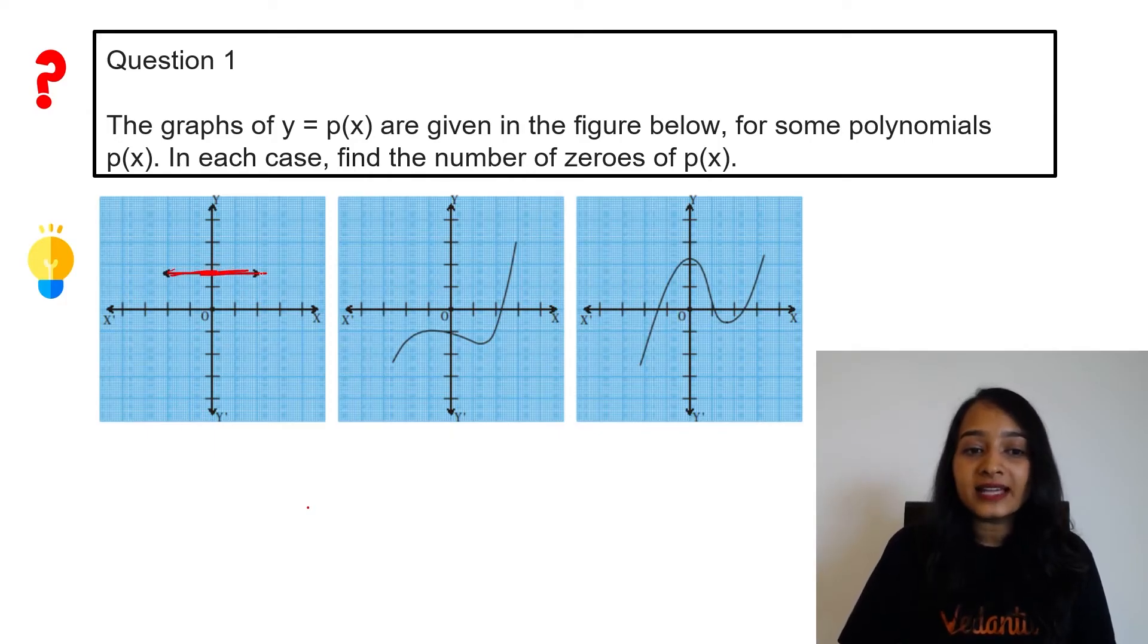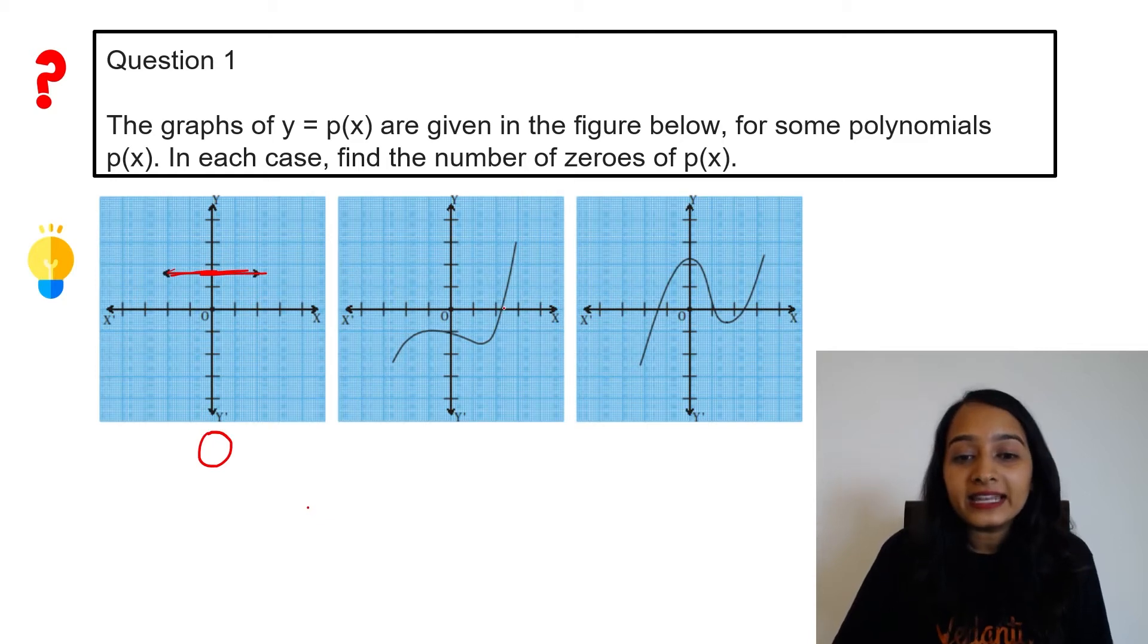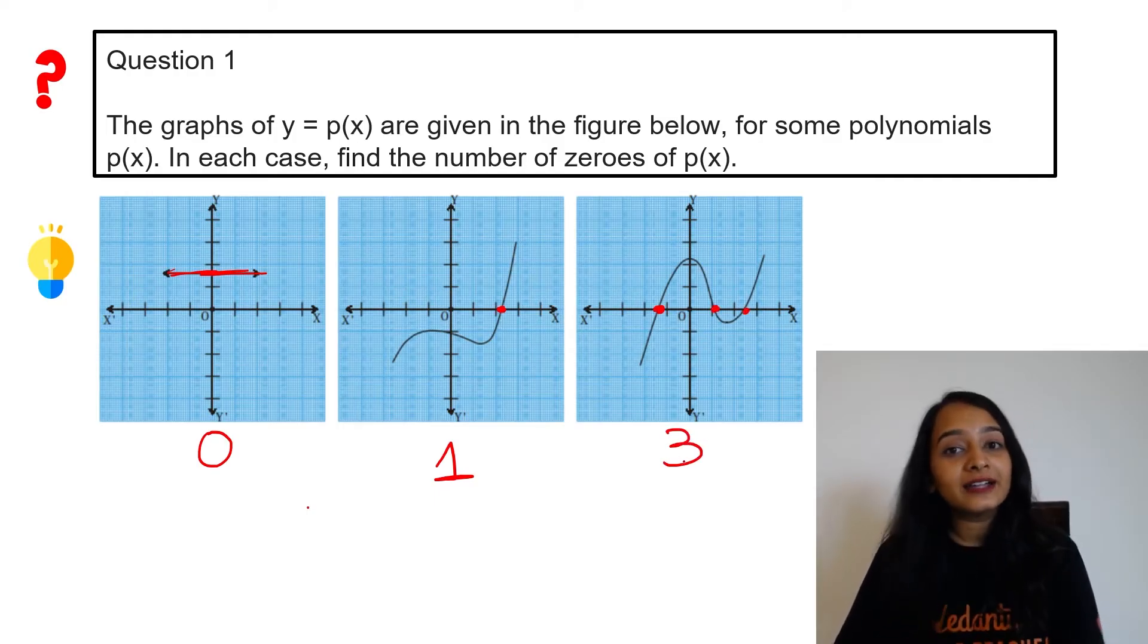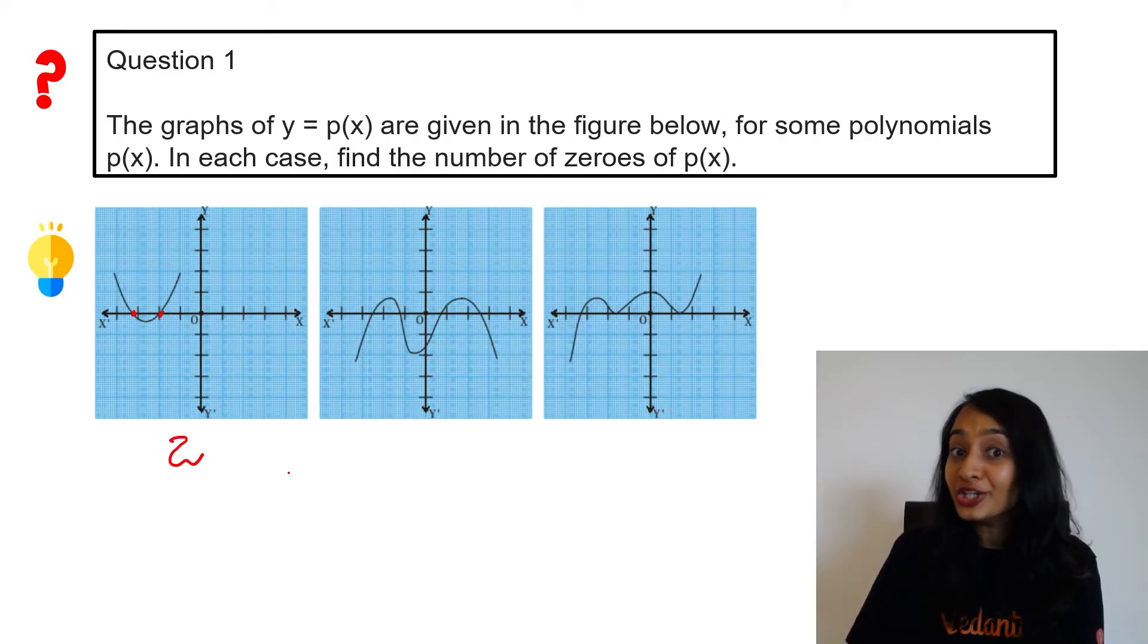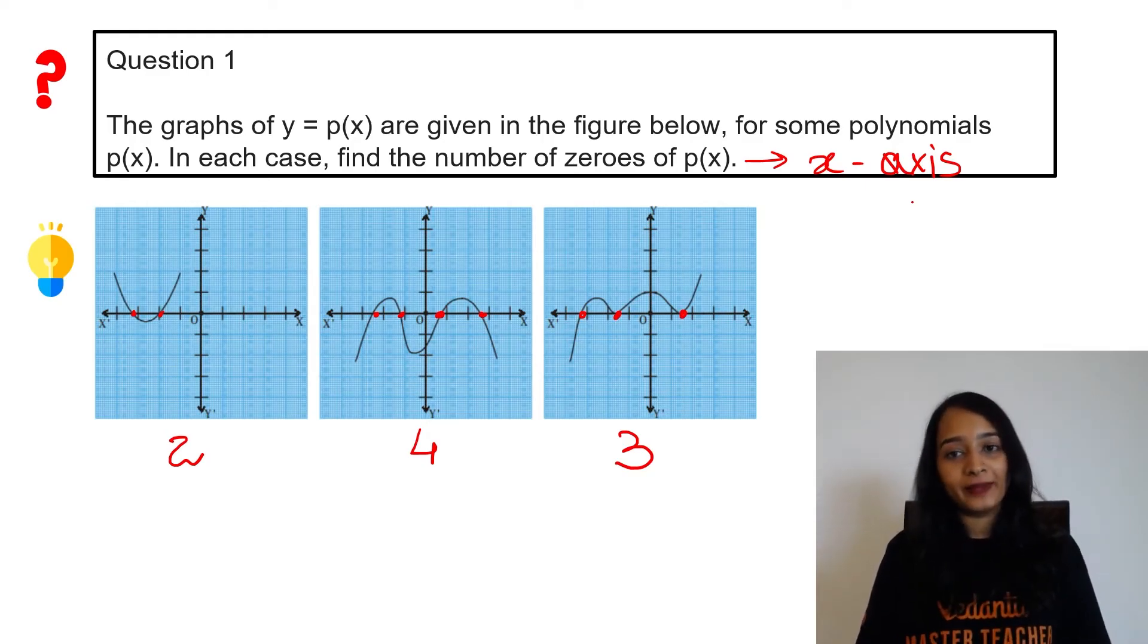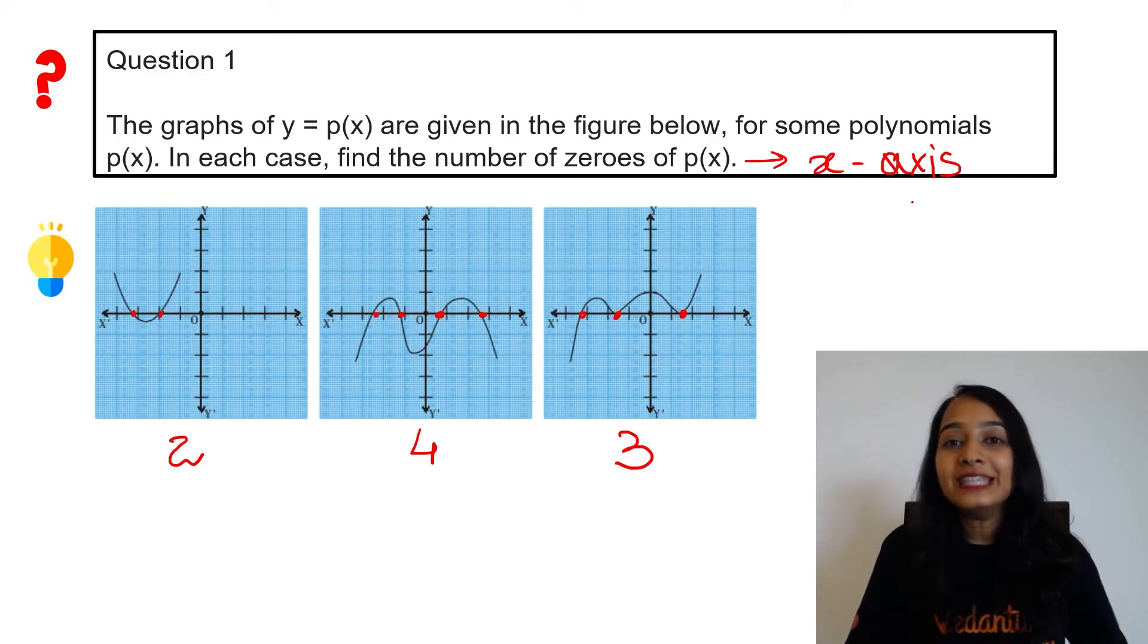The number of times the graph touches the x-axis is equal to the number of zeroes of the polynomial. So the number of zeroes of p(x) is equal to zero here. The number of zeroes is 3. However many times the graph touches the x-axis is equal to the number of zeroes of the polynomial. Any polynomial. This graph is of a polynomial. Right? Next question.